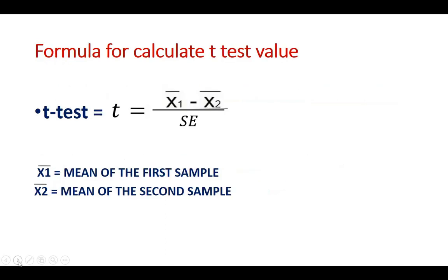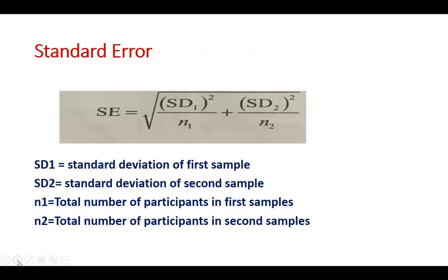The formula for calculating the t-test value is: t = (x̄₁ - x̄₂) / Standard Error, where x̄₁ is the mean of the first group and x̄₂ is the mean of the second group. Standard error accounts for the deviation in standard deviation when more than one sample is drawn from a population. The formula for standard error is: √(SD₁²/n₁ + SD₂²/n₂).